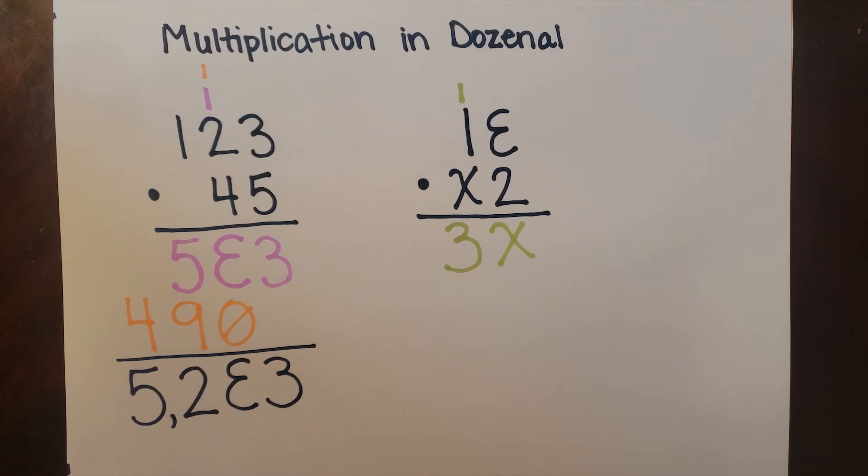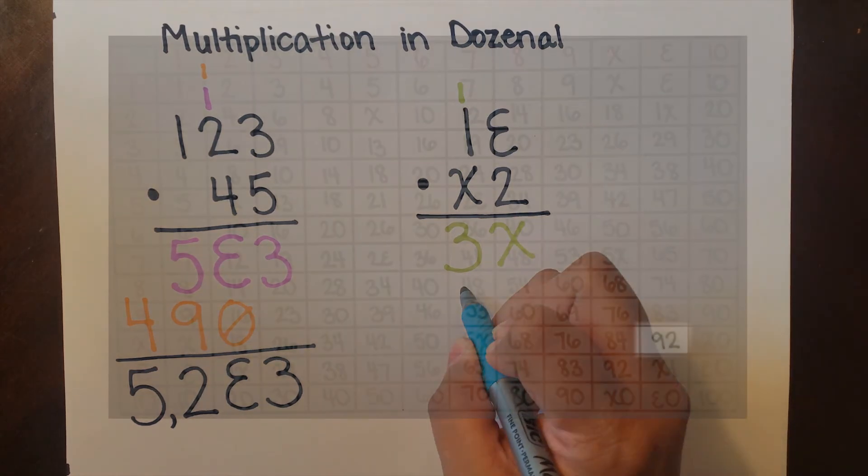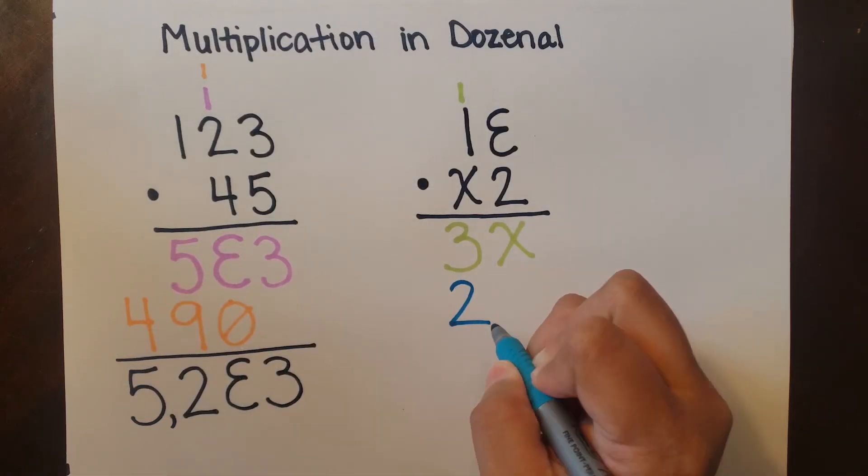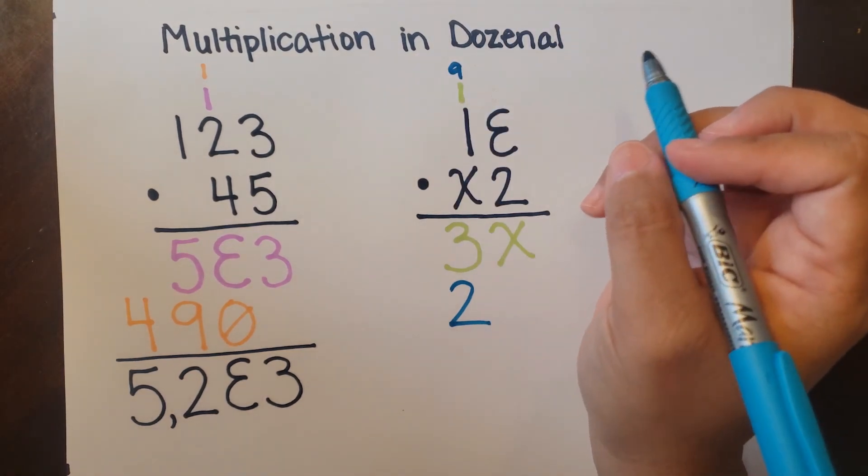For the next row we're going to start with deck times L. That's a more complicated one, but we can look at our multiplication table and see deck times L is 9 doe 2. So we bring down the 2 and carry up the 9 and do the next row.